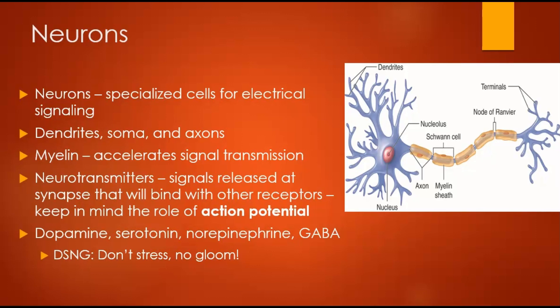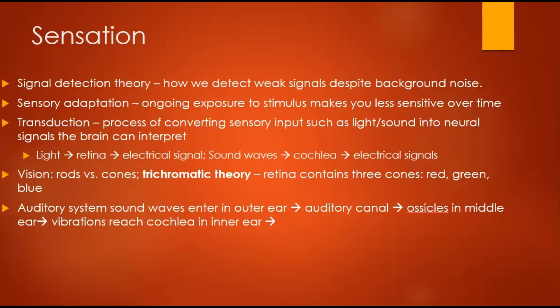Some important neurotransmitters to keep in mind: dopamine is involved with pleasure, reward, and motor control. Serotonin affects mood, sleep, appetite, and emotions. Norepinephrine deals with controlling alertness and arousal — that's where the fight-or-flight response comes in. And GABA is the brain's main inhibitory neurotransmitter, important for calming activity, anxiety control, and relaxation.